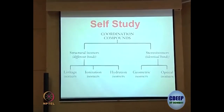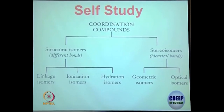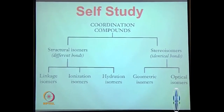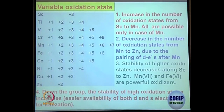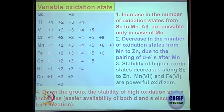Isomerism in coordination complexes is self-study — you are given enough information in the module and one or two questions may be expected from that part. Regarding variable oxidation states, we briefly discussed this in the first class. From scandium to manganese the variable oxidation states increase up to 7 and then decrease further. If you go down in the periodic table, higher oxidation states get stabilized more often.